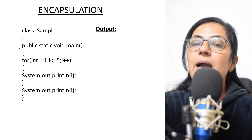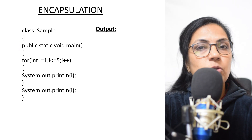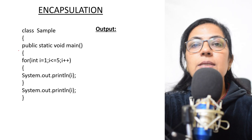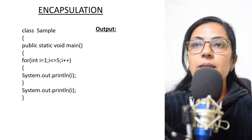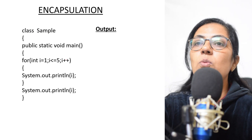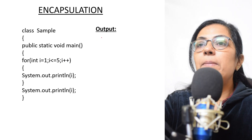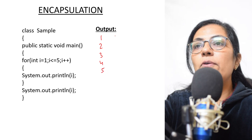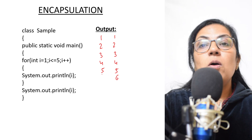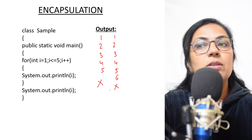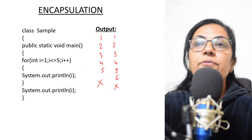I want all of you to watch those two previous videos to prepare this chapter properly — around four marks of questions can come from this chapter. For the question: class Sample, public static void main, for int i equals to 1, i less than equals to 5, i plus plus — many of you gave the answer as 1 2 3 4 5, and a few gave 1 2 3 4 5 6.